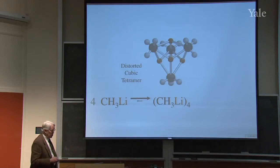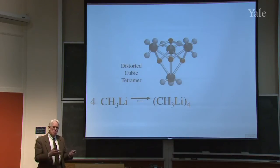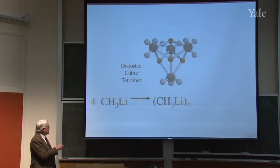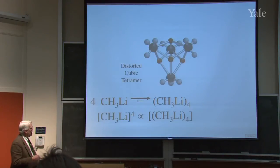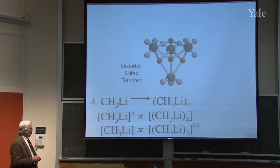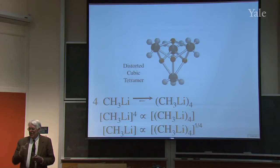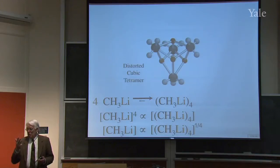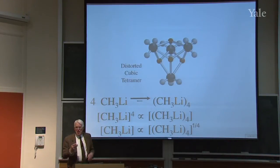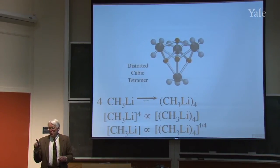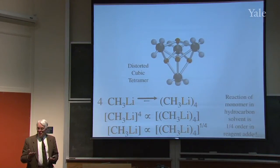But that's not what happens when you don't have excess ether available — then the equilibrium lies to the left. You have the equilibrium constant where the monomer is to the fourth power, so the monomer to the fourth is proportional to the tetramer, or equivalently, the monomer is proportional to the tetramer to the one-fourth power. So if you increase the tetramer by a factor of 16, you increase the monomer by 16 to the one-fourth power — a factor of 2 — and it would only double the rate. Reaction of monomer in a hydrocarbon solvent turns out to be one-fourth order in how much reagent you add.